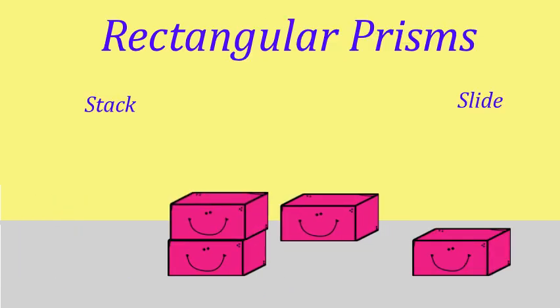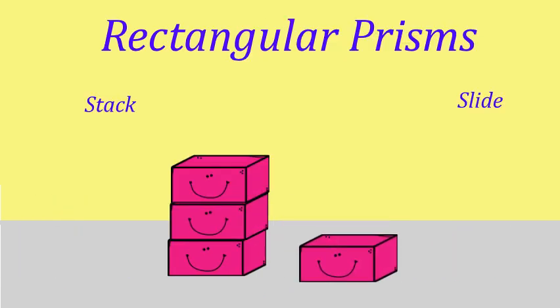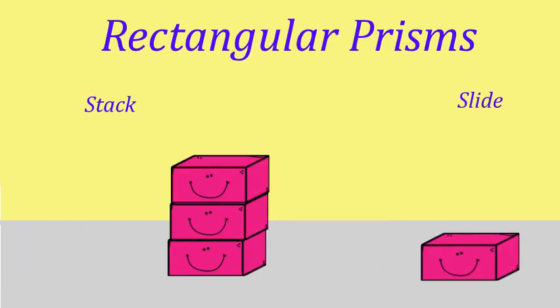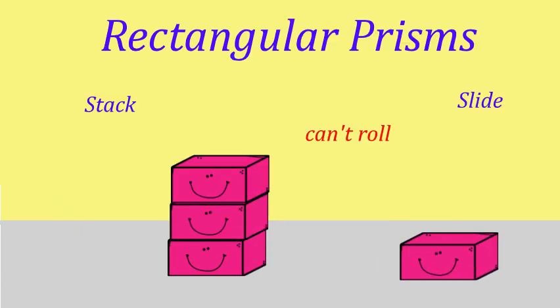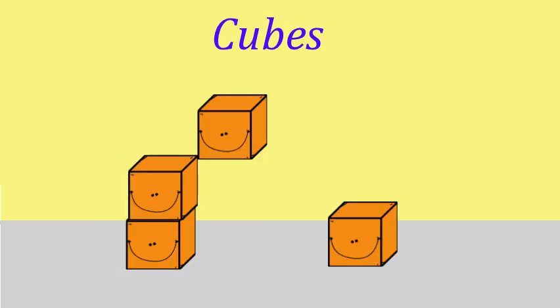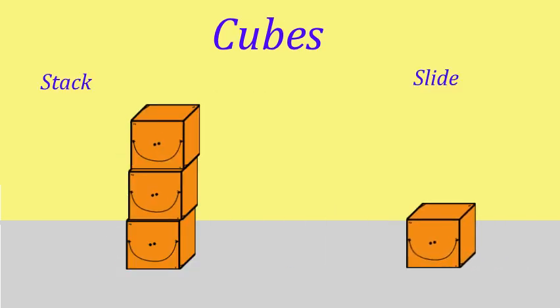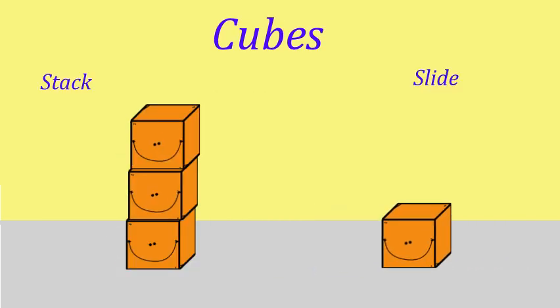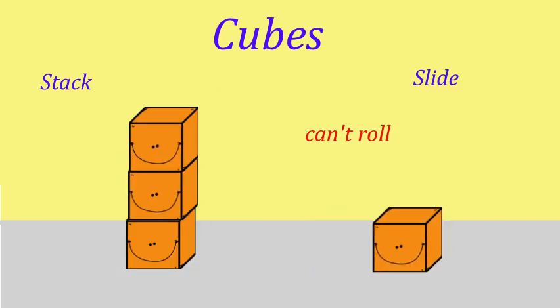Rectangular prisms can stack and slide, but they cannot roll. No, no, no. Cubes can stack and slide, but they cannot roll. No, no, no.